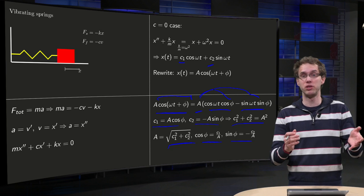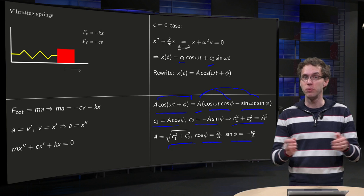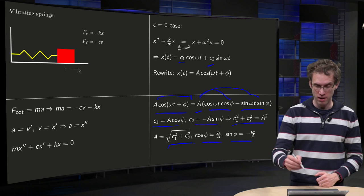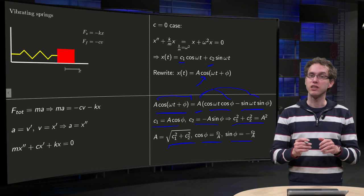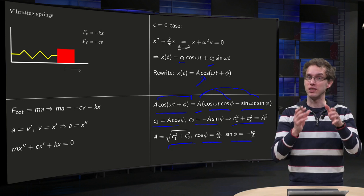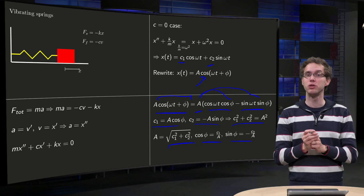So why would you do that? I mean, you already have your solution in terms of c one and c two, so why would you write it like this? Well, if you write it like this you can more clearly see what happens. This A is basically the amplitude of your solution.